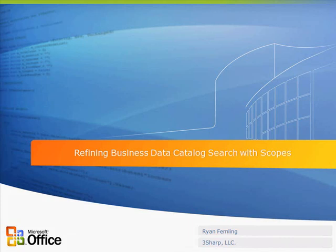I'm Ryan Femling with 3Sharp. Today we'll be discussing refining business data catalog search with scopes. In addition to site collections and people, Microsoft Office SharePoint Server 2007 enables you to search entities and other business data catalog items. The results of these BDC searches can easily be refined with scopes.